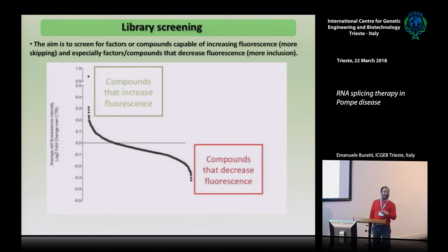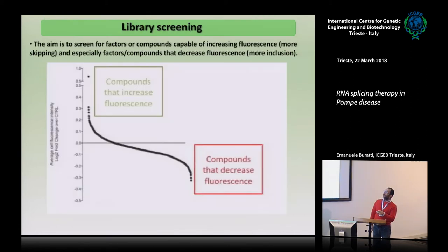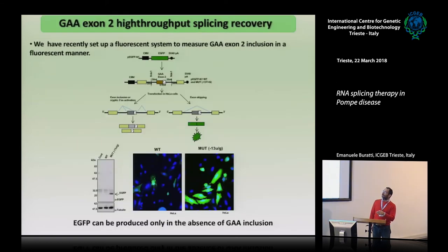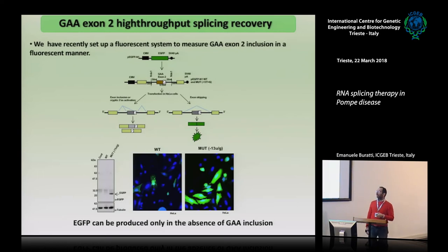Once you make a stable cell line expressing the mutant construct, you can screen thousands of compounds and look for those that increase or decrease the fluorescence. The ones that decrease fluorescence are most interesting therapeutically — they are improving exon 2 inclusion in the presence of the mutation and restoring splicing. The ones that increase fluorescence are also important because you want to know which compounds might make the disease condition worse and should be avoided in patients.